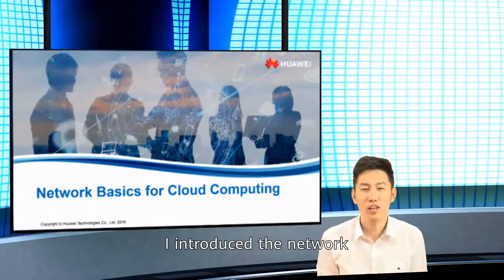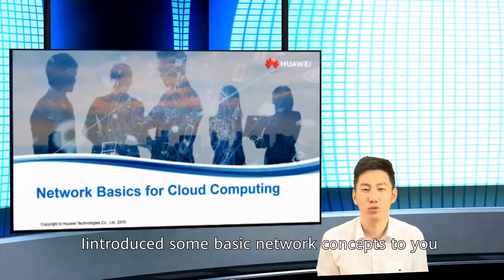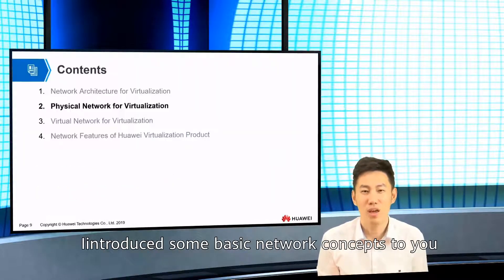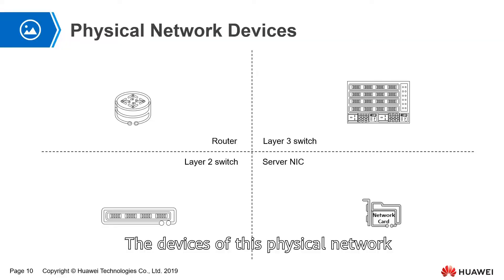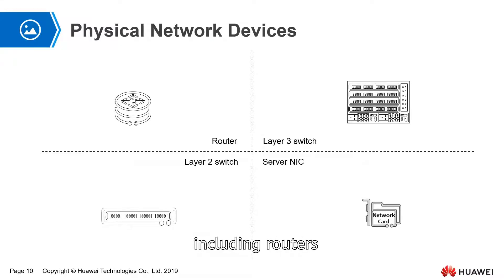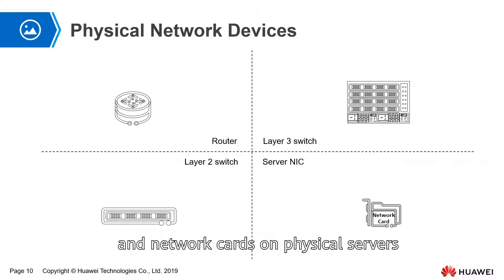In the last video, I introduced the network architecture for virtualization and some basic network concepts. In this video, I will introduce the physical network for virtualization. The devices of this physical network include routers, layer 3 switches, layer 2 switches, and network cards on physical servers.